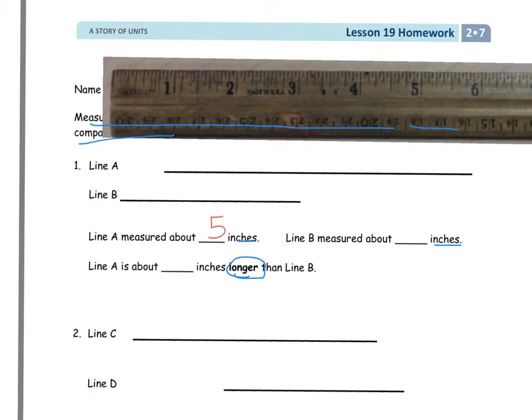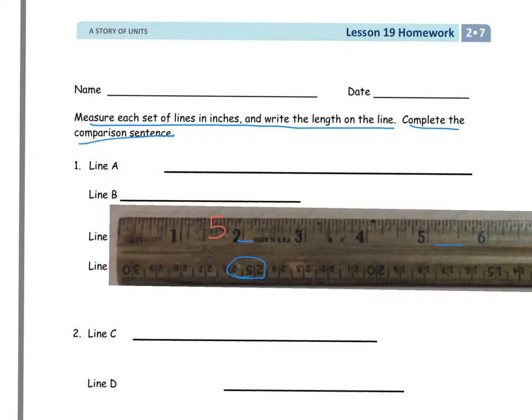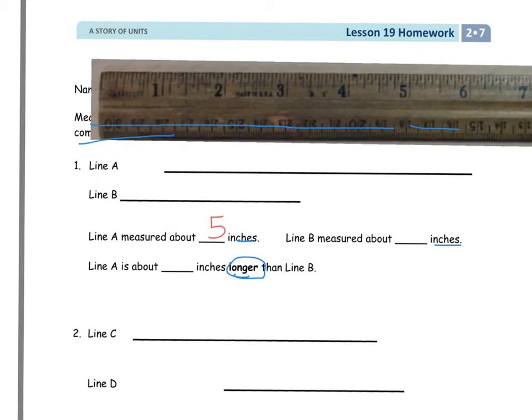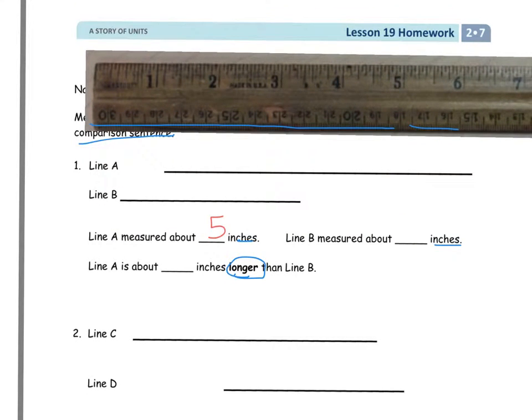Now I have to measure line B. I'll slide the ruler down and look in inches again, and it's about 3. I'm going to put 3 on that line, and now I'm going to finish my statement. Line A is about blank inches longer than B.